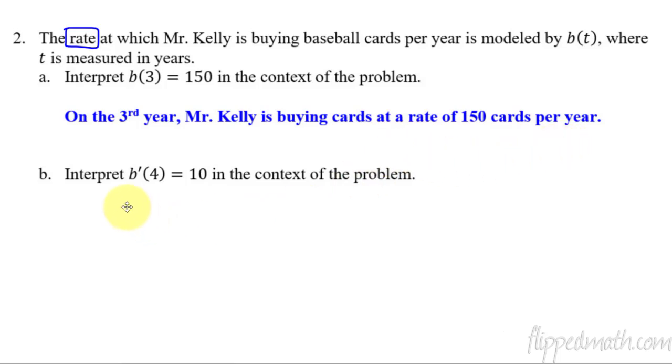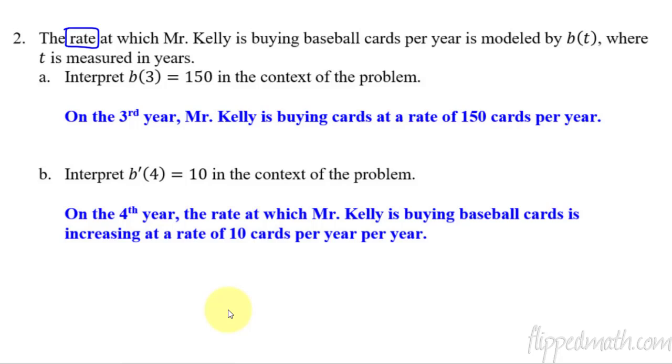So what happens if we take the derivative of a function that already is a rate of change? If we take its derivative then now we're saying the rate of change is going to be changing. So this is kind of interesting to look at this. On the fourth year the rate at which Mr. Kelly is buying baseball cards is increasing. So B is the rate, it's increasing at a rate of 10 cards per year per year. Why per year per year? Because it was just baseball cards per year. That's B of t. So now when we do a rate of change of that it's a per year again. Or you could say per year squared if you prefer, like this per year squared. If you want to just say cards per year squared.